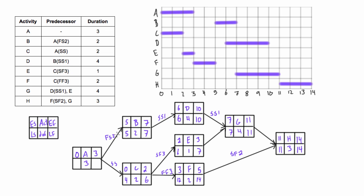Looking at activity C, we have two options again. The start-start relationship gives a potential late start of four, or we have a finish-to-start minus two from F - taking F's late start of three and subtracting two gives us three as the other potential late start for C. With the four, adding three gives seven; if we take three and add three, we get six. We have competing values for the late finish and must take the smaller one on the backward pass, so three wins. We put three in for C's late start, and three minus three is zero for the late finish of A. Ending on zero confirms we've done it correctly.